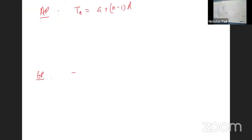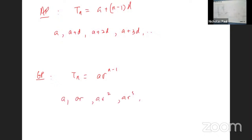There are two other sequences you should know about. The first is an AP — Arithmetic Progression — and the next is a GP — Geometric Progression. The general form of an AP follows the formula: a plus (n minus 1)d. For a GP it is: a times r to the power (n minus 1). For an AP, the first term is a, the second is a plus d, and you keep adding d. For a GP, the first term is a, then ar, ar squared, ar cubed, and so on.